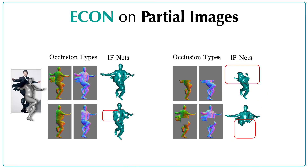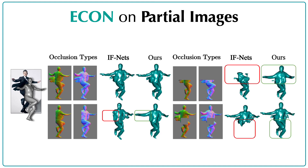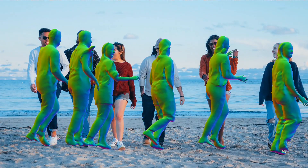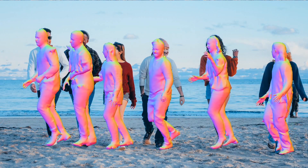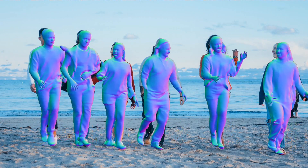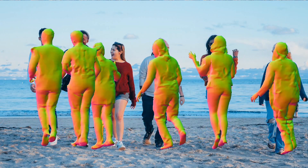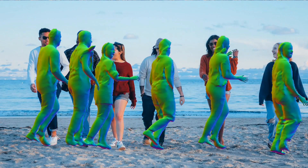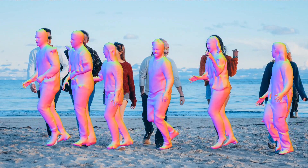Due to its ability to complete shapes, ECON can be applied to images in which only part of the body is visible, in-painting the missing geometry in 3D space. This ability is important because it means that ECON can be applied to multi-person images with occlusion. Note that ECON was not explicitly trained for multi-person cases, yet it can cope with this.